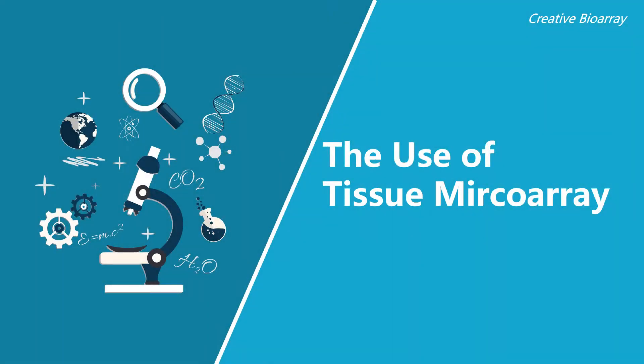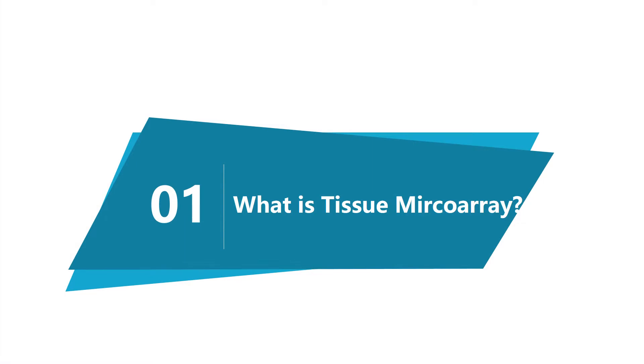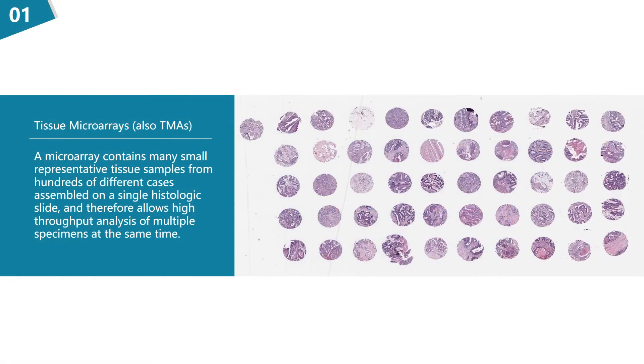Tissue microarrays, together with gene chips, protein chips, and cell chips, constitute a series of biochips which enable researchers to effectively learn about hundreds of tissue samples at the same time. Tissue microarray is a recent innovation in the field of pathology. They consist of paraffin blocks in which up to 1,000 separate tissue cores are assembled in array fashion to allow multiplex histological analysis.